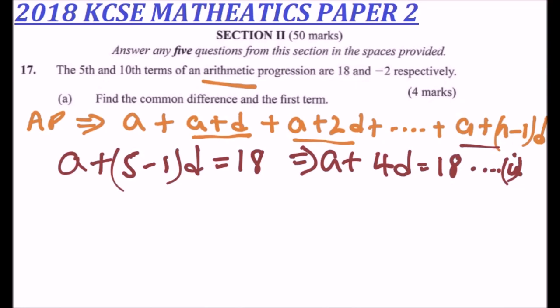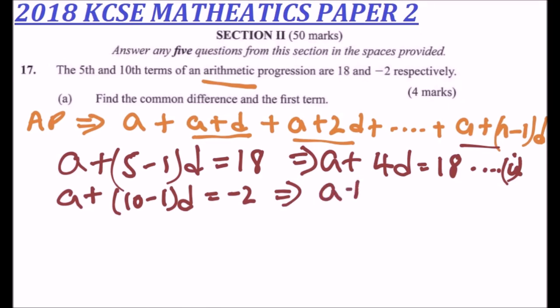For the 10th term, we have a plus 10 minus 1 multiplied by d equals minus 2. That gives us a plus 9d equals minus 2, and that is our second equation. So we realize that these two form a simultaneous equation.